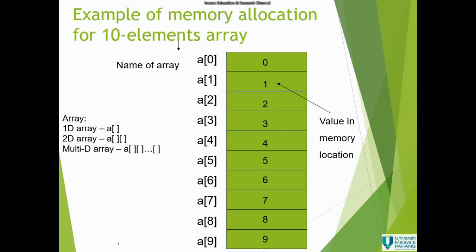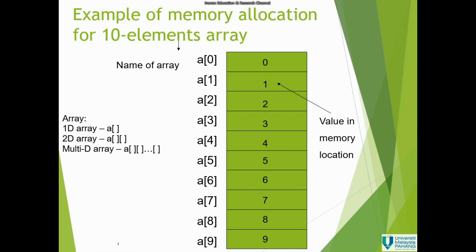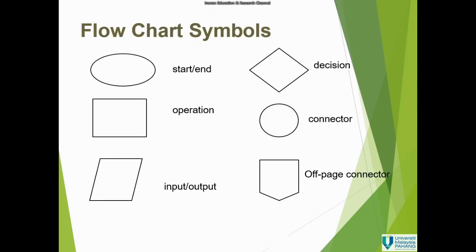Arrays have a one-dimensional form — the basic one with one row — a two-dimensional array with rows and columns, and a multi-dimensional array with more than several rows and columns. For this syllabus, I will only cover one-dimensional and two-dimensional arrays. We also need to know the proper shapes to use in a flowchart: start, operations, input/output, decisions, connectors, and off-page connectors.